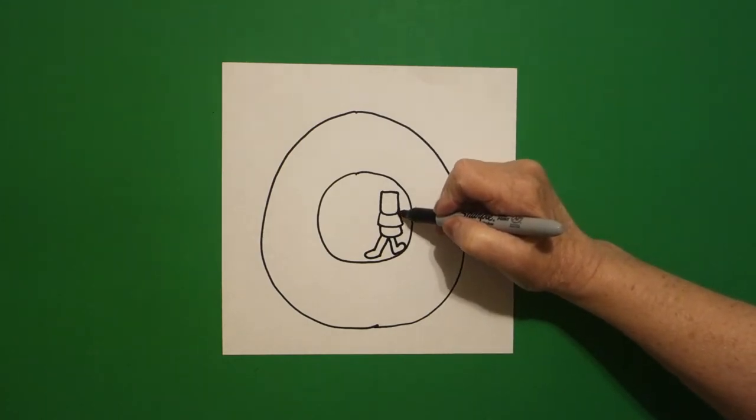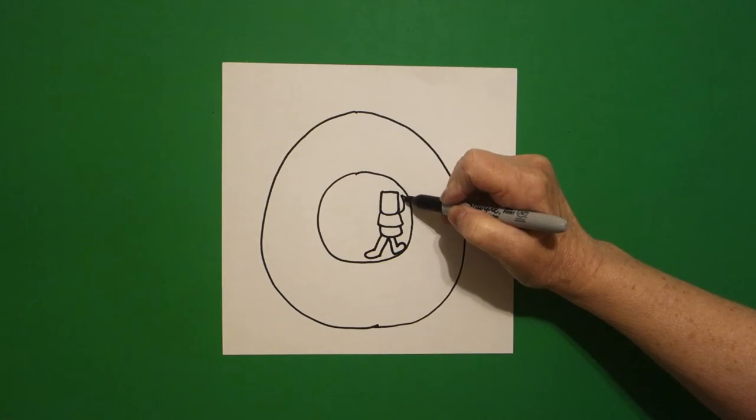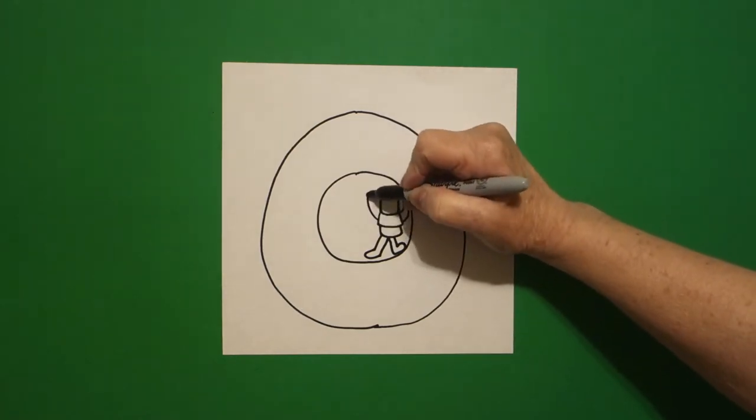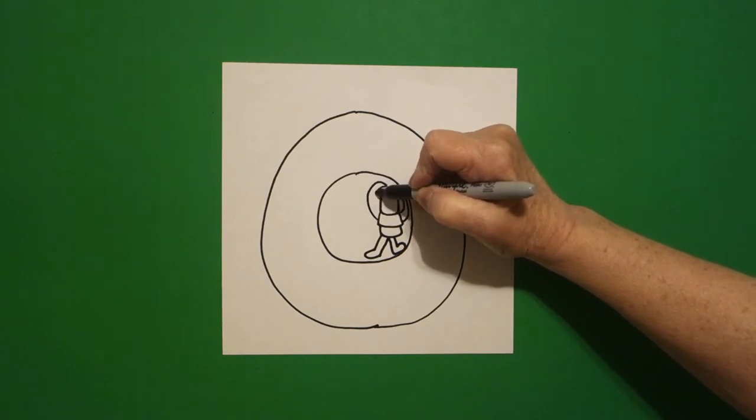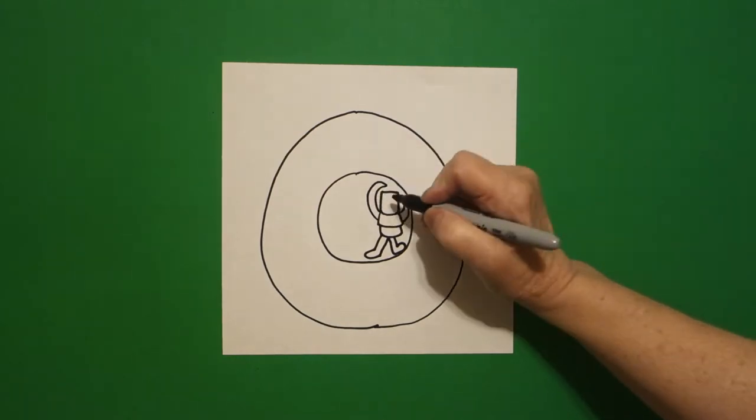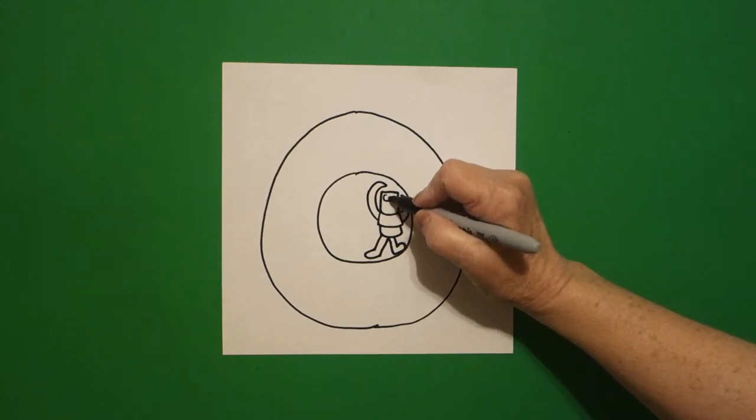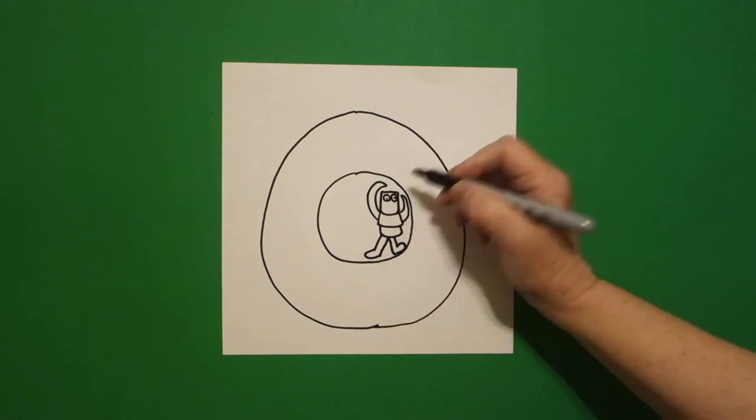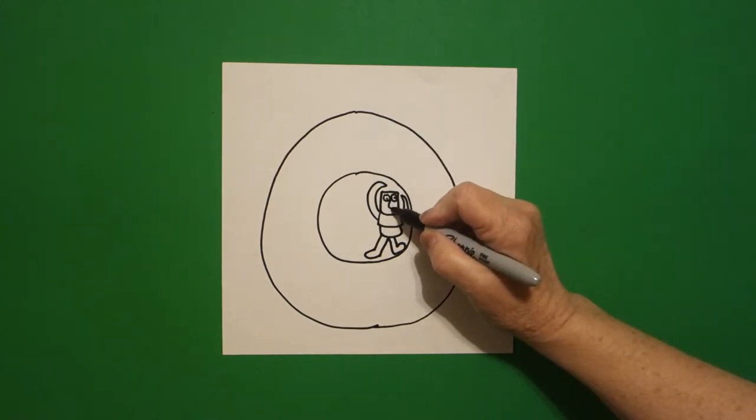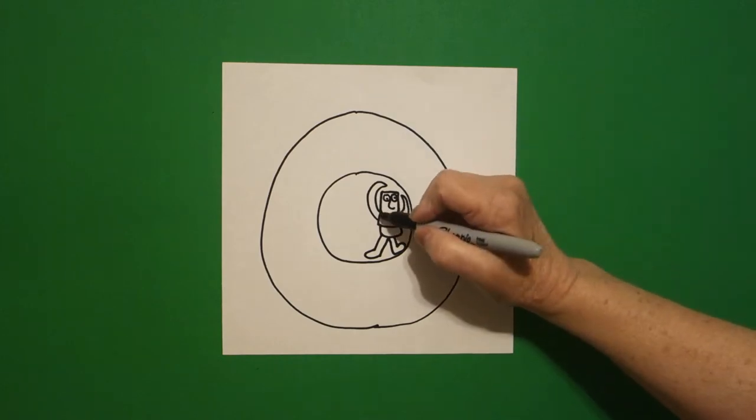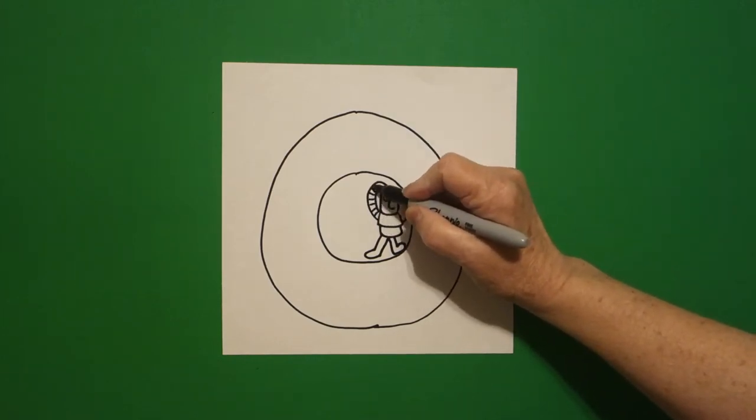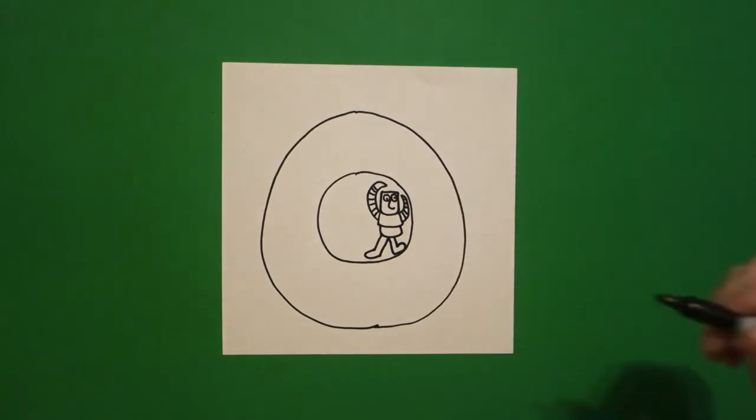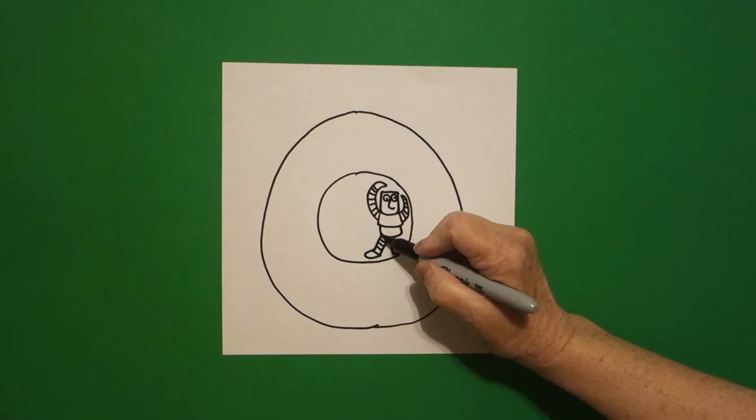Come over here on the right and draw a curve line up, curve line down, connect. Come on the left, curve line up, curve line down, connect. Come inside, one baby circle, two baby circles, dot, dot, right in the center, curve line. We're going to add little straight lines inside on the left, inside on the right, down here on the left, down here on the right.